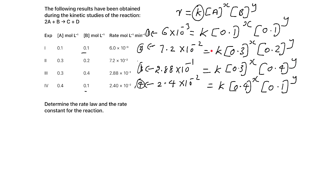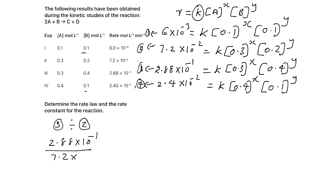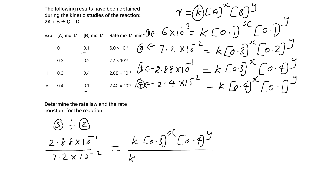If you divide equation 3 by equation 2, the K terms cancel, and the 0.3 raised to X terms also cancel, so you can find Y. Dividing: 2.88 × 10⁻¹ by 7.2 × 10⁻² gives 0.4 × 10 = 4 on the LHS. On the RHS, we get (0.4 / 0.2) raised to Y, which equals 2 raised to Y.